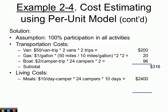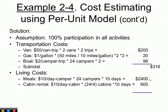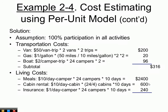Living costs include meals at $10 per camper day × 24 campers × 10 days = $2,400. Cabin rental at $10 per day per cabin, with each cabin holding 4 campers — 24 ÷ 4 = 6 cabins × 10 days × $10 = $600. Insurance at $1 per day per camper × 24 × 10 = $240. Total living costs add up to $3,240.